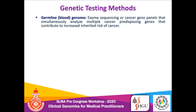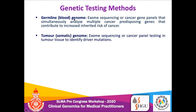The available NGS methods include exome sequencing — looking at all protein-coding regions of the genome — or cancer gene panels, where panels of all identified cancer predisposing genes are used to simultaneously analyze multiple genes to identify the causative genetic mutation increasing cancer risk in the family. In germline testing we use blood; in somatic testing we use tumor tissue, and here also exome sequencing or cancer panel testing can identify the driver mutations causing the tumor.